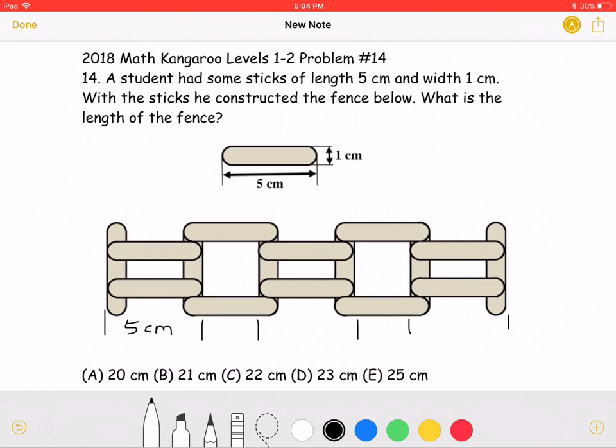In the next section, however, we know that the width is 1 cm. So, this is 1 cm, and this is 1 cm. That means that we have 3 cm left here.